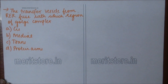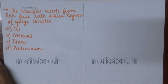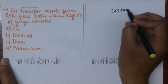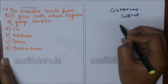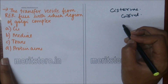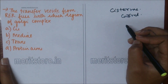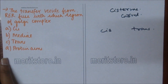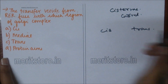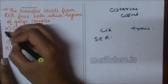Transfer vesicles from RER fuse with which region of the Golgi complex? A) cis, B) medial, C) trans, D) protein arms. The margins of the cisternae of the Golgi body are slightly curved. Each cisternae has a convex cis or forming phase towards the nucleus and ER, and a concave trans or maturing phase towards the plasma membrane. Nuclear membrane and ER are the source of small vesicles that fuse with the cis phase. So option A is the correct answer.